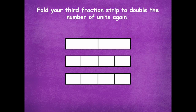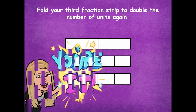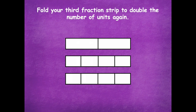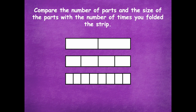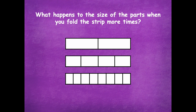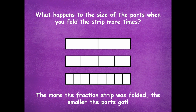We're going to fold our third strip to double the number of units again. Fold it all back up again and then fold it one more time in half. Do that and then click play when you're ready for the next step. So now what's the new unit on these fraction strips? Eighths, because we have eight equal parts. The more the fraction strip was folded, the smaller the parts got — that's because we folded to make more units.